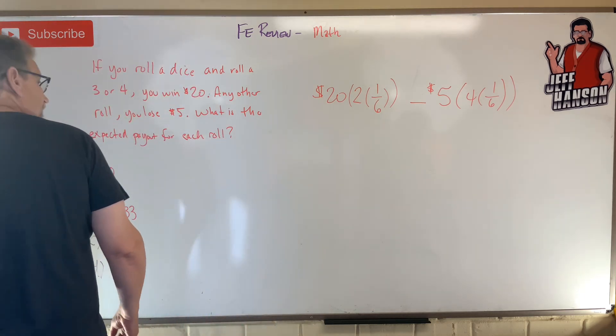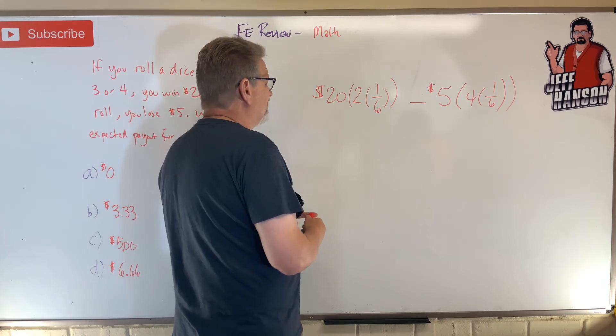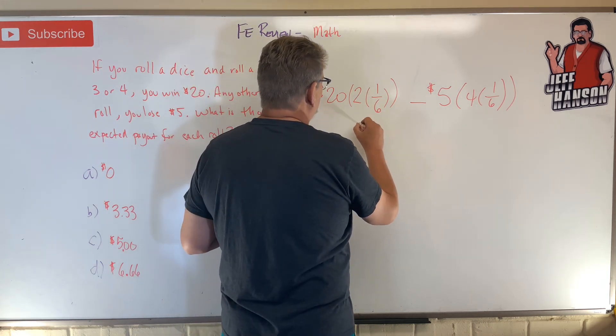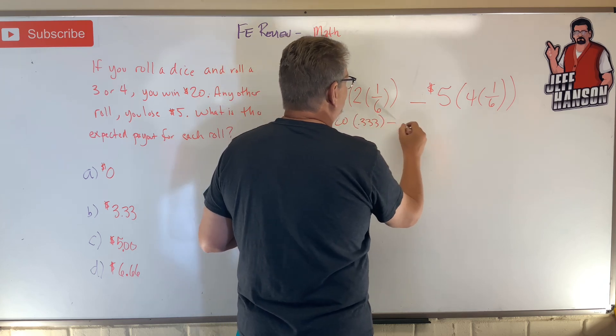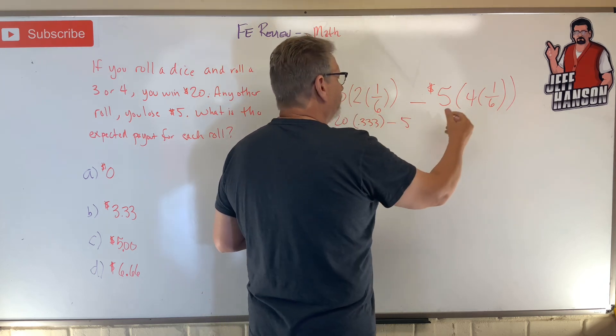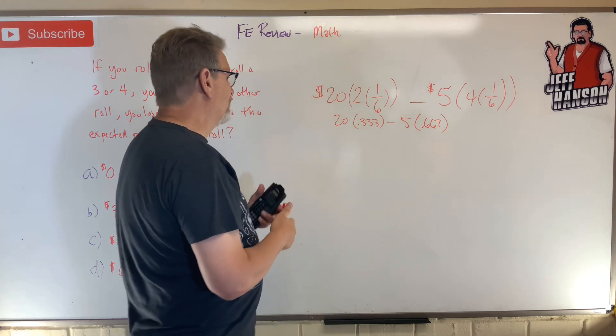If you just multiply that together, that should get us the answer. Let's see what we get here. Two sixths is how much? One third, that's 0.333. So 20 times that minus 5 times four over six, which is 0.667.